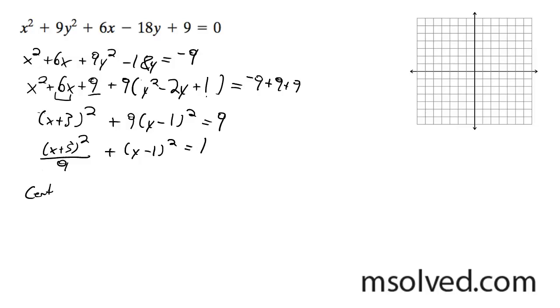So my center in this case is going to be negative 3, 1, and then my vertices is going to be negative 6, 1, and 0, 1 because that's my major axis here. It's 3, so I subtract 3 from the x component, then I add 3.